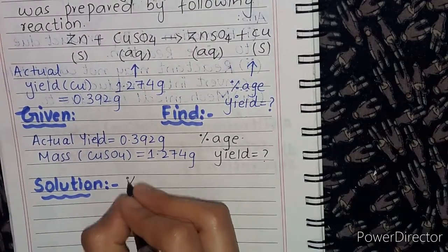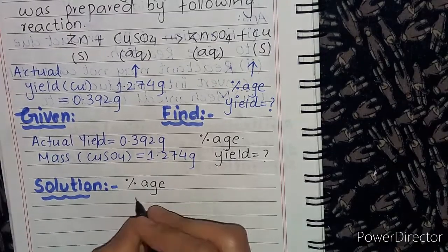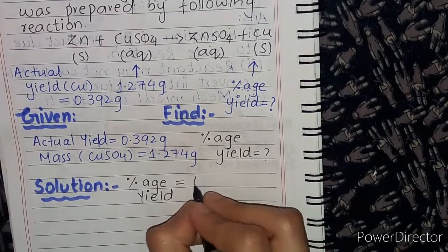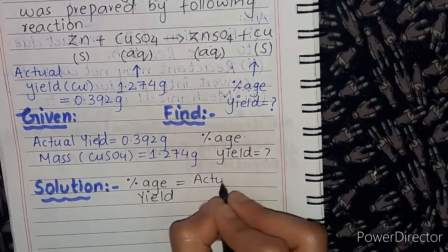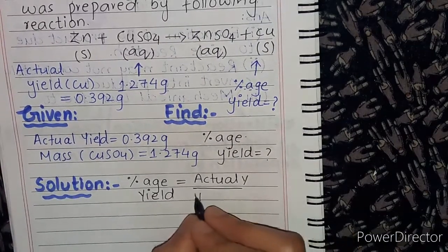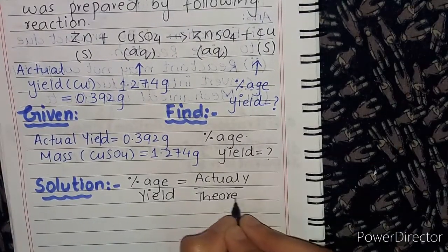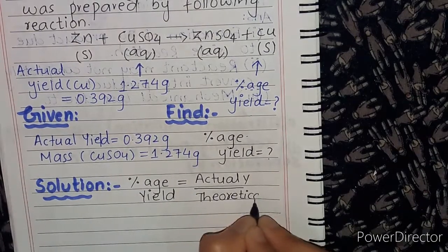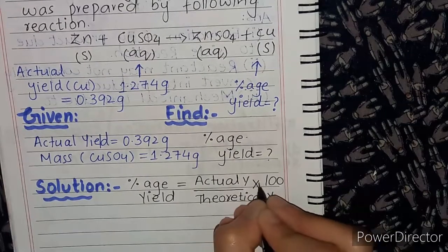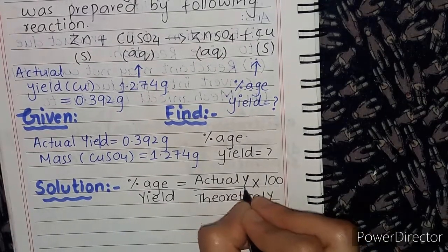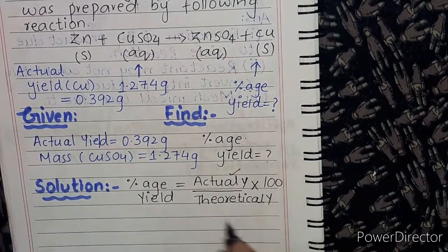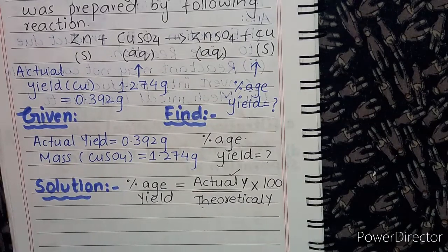Percentage yield is equal to actual yield divided by theoretical yield, multiplied by 100. We have the actual yield and we will multiply by 100 after finding the theoretical yield.